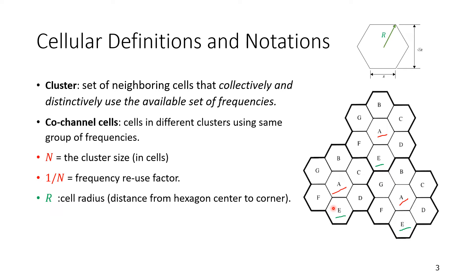Capital R is the cell radius. It's the distance from the hexagon center to the corner. And as we mentioned, it's also the length of the sides of the segments of the hexagon. What is D? D in blue is shown here to be the distance between co-channel cells. So we have capital R, capital D, capital N.